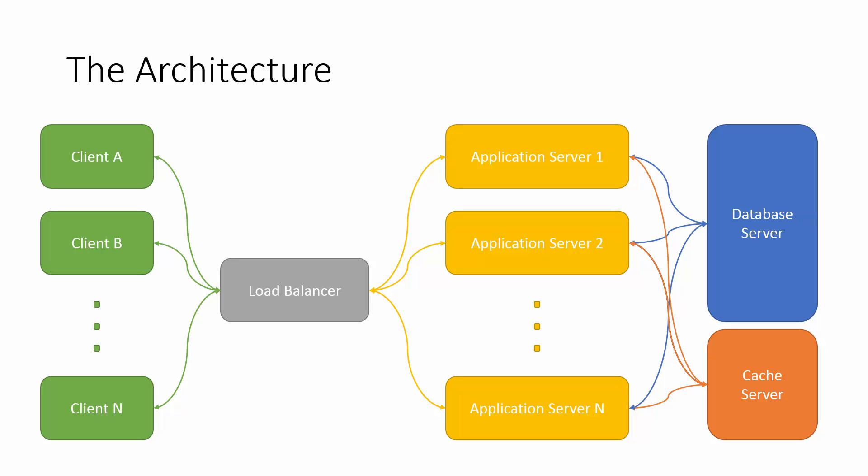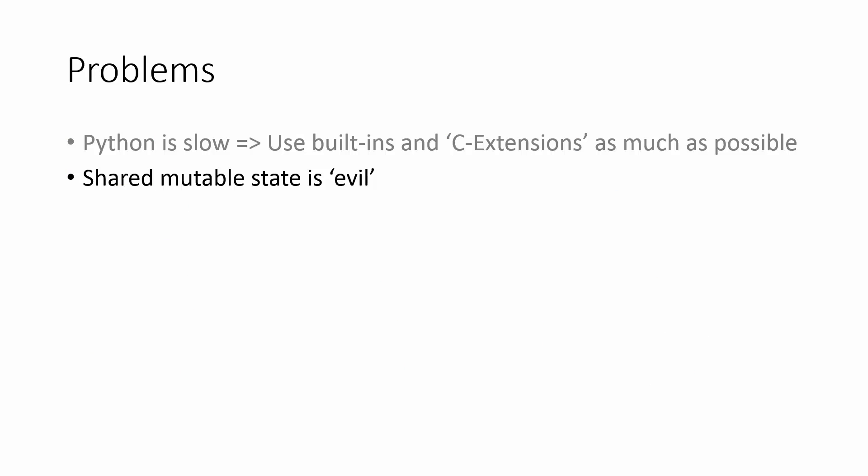I deliberately left out the implementation details of what it means to be an application server — is it a process, a thread, some kind of execution context? It doesn't really matter. Scalability means you can use any combination of these things and the load balancer doesn't care, and the clients don't care. But when you do that, you come to a problem with shared mutable state — which is evil, as everybody knows.